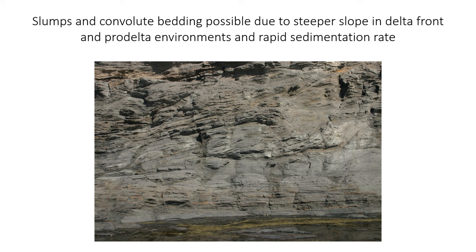Because of the potentially steeper slopes, you can potentially find convolute bedding or even larger slumps in the deeper parts of deltas such as the delta front or the pro-delta. High sedimentation rates near the river mouth also promote slope instability because the rapidly accumulating sediment doesn't have time to compact and is really water-rich. This kind of soft sediment deformation doesn't often occur in other coastal environments, so if it's present that should be another good marker that you might be in a delta situation.